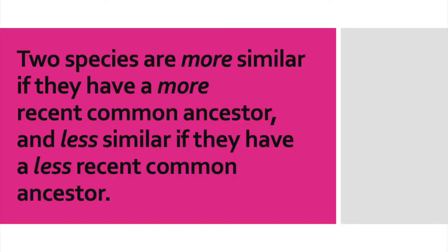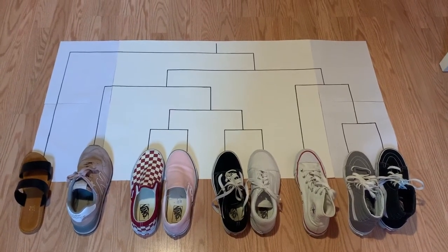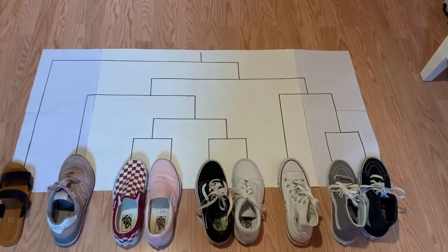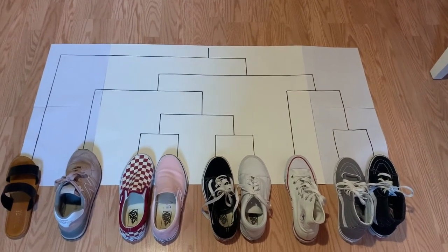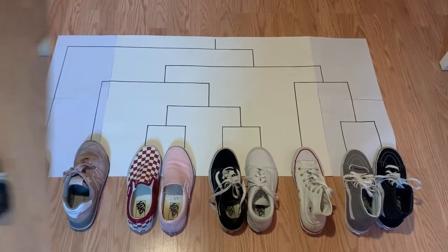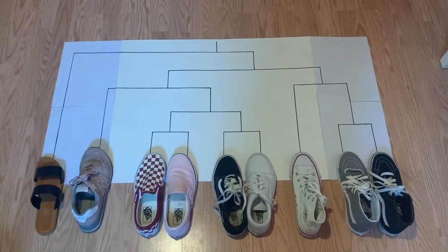It's important to note two species are more similar if they have a more recent common ancestor, and less similar if they have a less recent common ancestor. Additionally, this phylogenetic tree is a rooted tree because there is one internal node up there, which represents a common ancestor to all the other nodes of the tree. Now we can begin analyzing the phylogenetic tree.